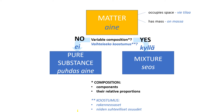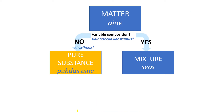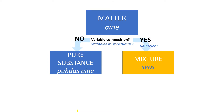The first division in the classification of matter depends on whether or not the composition can vary from one sample to another. A pure substance — puhdas aine — is one with constant composition. Most of the matter around us consists of mixtures of pure substances.